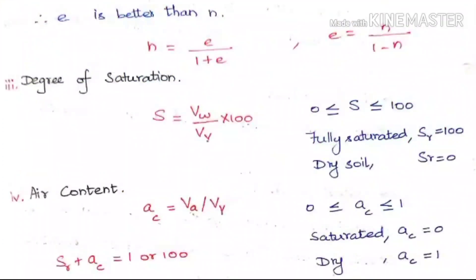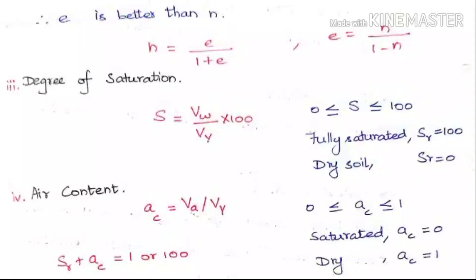The fourth property is air content, denoted by AC. It is similar to degree of saturation but considers the volume of air alone. The formula is: volume of air divided by volume of voids. If the voids are fully filled with air, AC = 1. If the voids are fully filled with water, the soil is saturated and AC = 0. The range is from 0 to 1 (or 0 to 100%).